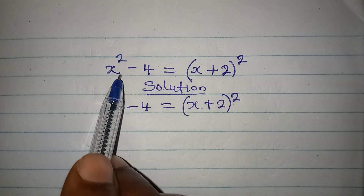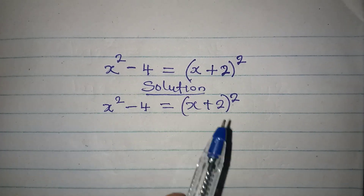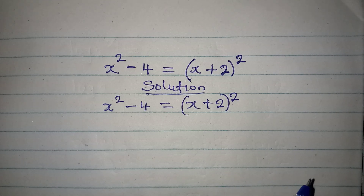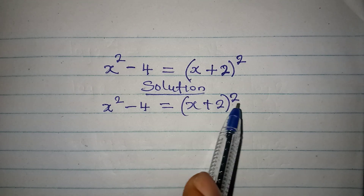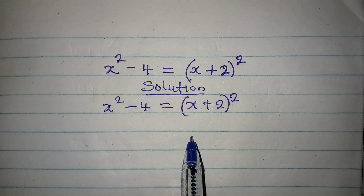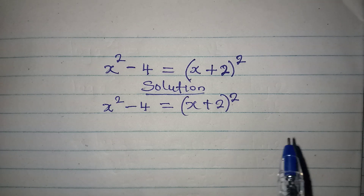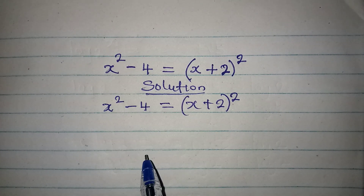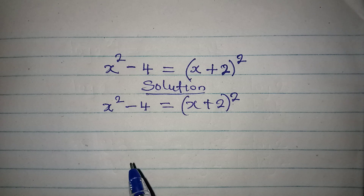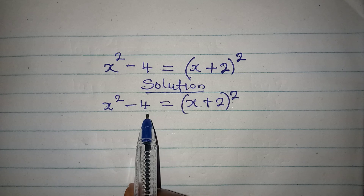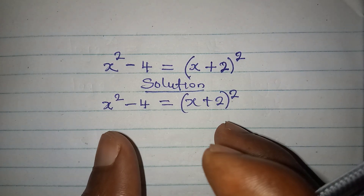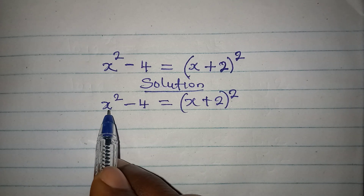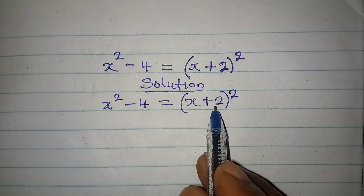Hello everyone, let's provide the solution to this problem very quickly: x squared minus 4 equals x plus 2 squared. If you are following my videos, you will see that we have done something like this in one of our previous videos, and some persons were asking if I could redo the video, so I have to do something that looks like that: x squared minus 4 equals x plus 2 squared.